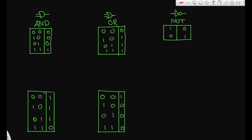So that means this gate, this truth table we just drew out, is actually the truth table for a gate called NAND — which means NOT AND. It's a NOT and an AND gate, so the output of an AND gate goes into a NOT gate. The way you draw it is the same as an AND gate, except with a little bubble at the end.